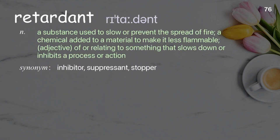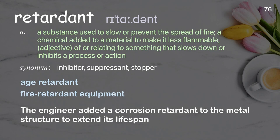Retardant: A substance used to slow or prevent the spread of fire; a chemical added to a material to make it less flammable. Adjective: of or relating to something that slows down or inhibits a process or action. Examples: Age retardant. Fire retardant equipment. The engineer added a corrosion retardant to the metal structure to extend its lifespan.